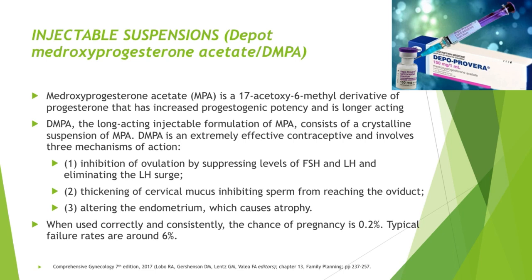MPA is an extremely effective contraceptive with three mechanisms of action: first, it inhibits ovulation by suppressing FSH and LH levels and eliminating the LH surge; second, it thickens the cervical mucus, thereby inhibiting sperm from reaching the oviduct; and third, it alters the endometrium, causing it to atrophy. When used correctly and consistently, the chance of pregnancy is just 0.2%, while typical failure rates are around 6%.